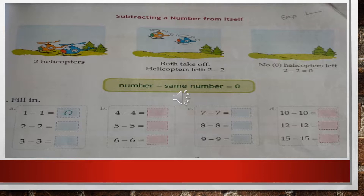15 minus 15 is equal to 0, because we had 15 numbers and we subtracted 15 from it — so the answer will be 0. When we subtract the same number, nothing is left, only 0 remains. And 0 does not have any value by itself alone — it gets value only when we add 0 to some other numbers.